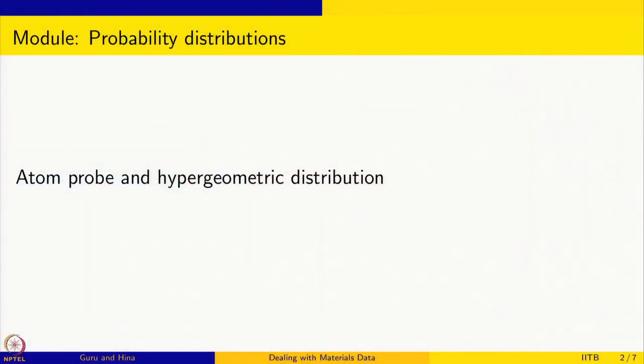We will continue with atom probe. We looked at the selection process and came to the conclusion that it is binomial — specifically negative binomial. Suppose you have to detect 100 atoms: how many failures will happen before you reach the target of 100? That is what the negative binomial distribution describes. For a detector efficiency of 0.6, you will fail about 50 to 70 times before you actually reach 100. That is what the negative binomial distribution showed.